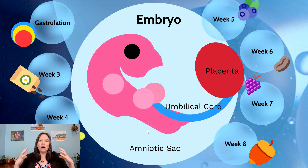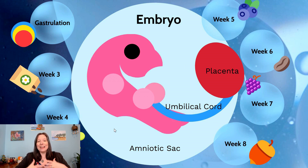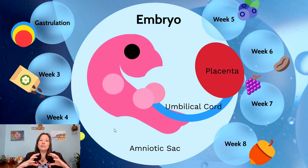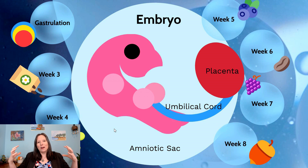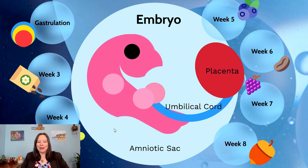The placenta, the umbilical cord, and the embryo are in a larger structure known as the amniotic sac. The amniotic sac is a watery, cushiony sac that allows the embryo to float. It gets bigger and bigger until the end of pregnancy, where the fetus fills the whole sac. When a person's water breaks, that's the amniotic sac rupturing at the end of pregnancy.